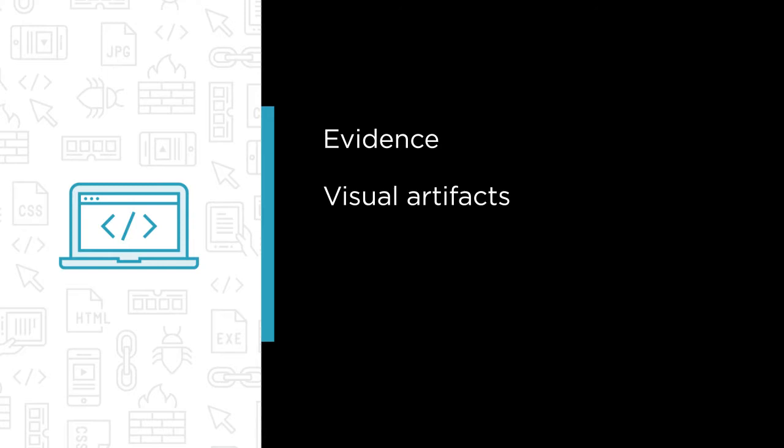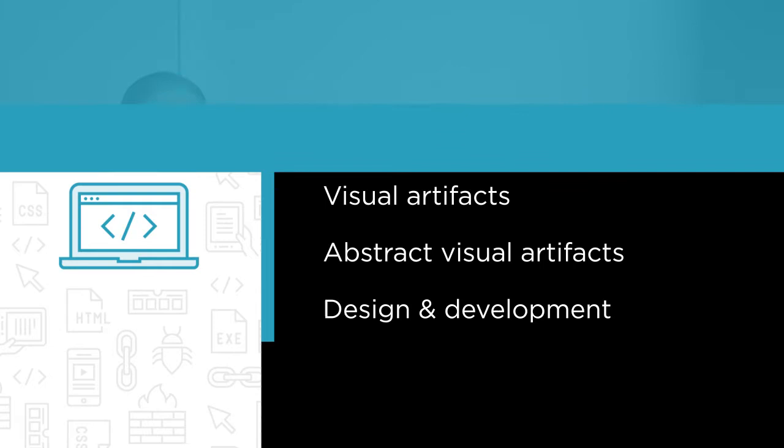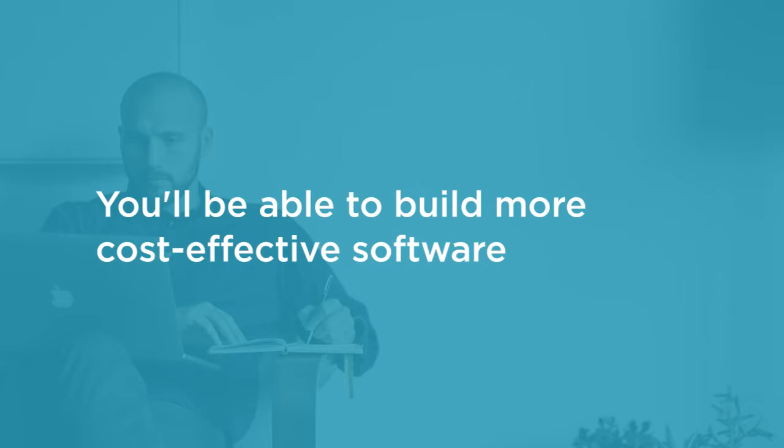So in this course, we are going to get the damning evidence of what makes software development an unpredictable science, turn requirements into visual artifacts for customers, abstract visual artifacts to input and view models, and then use those models — greater than domain and data models — to drive design and development. This course will make you familiar with a top-down methodology for building more cost-effective software because you deliver the right thing right the first time. Well, sort of.